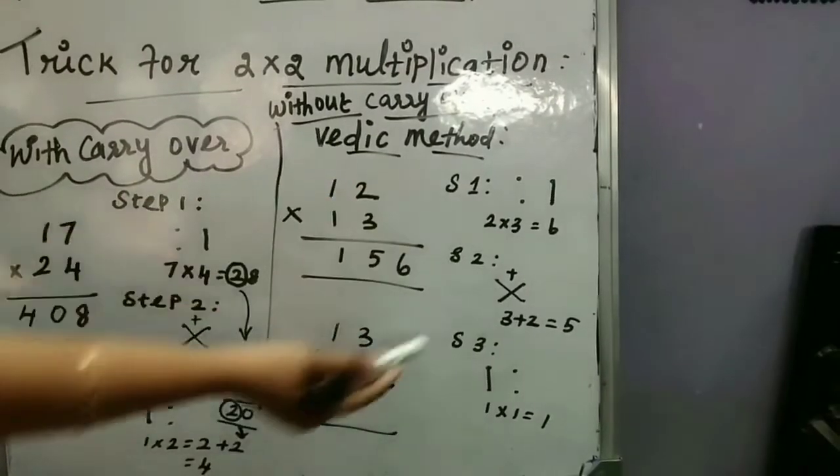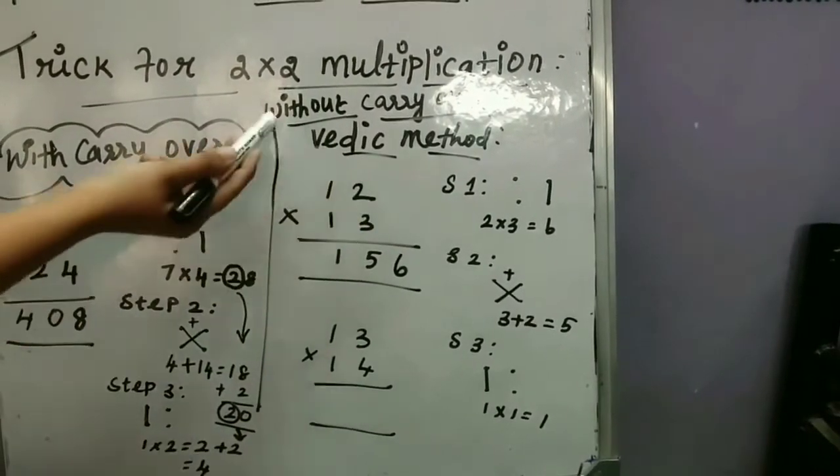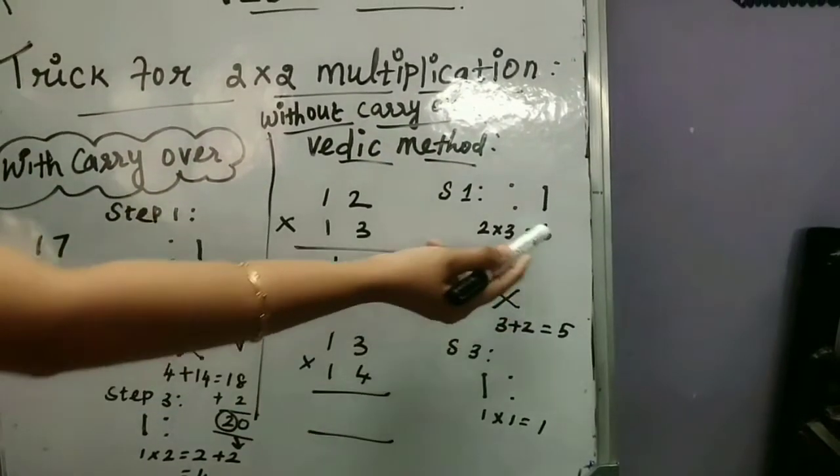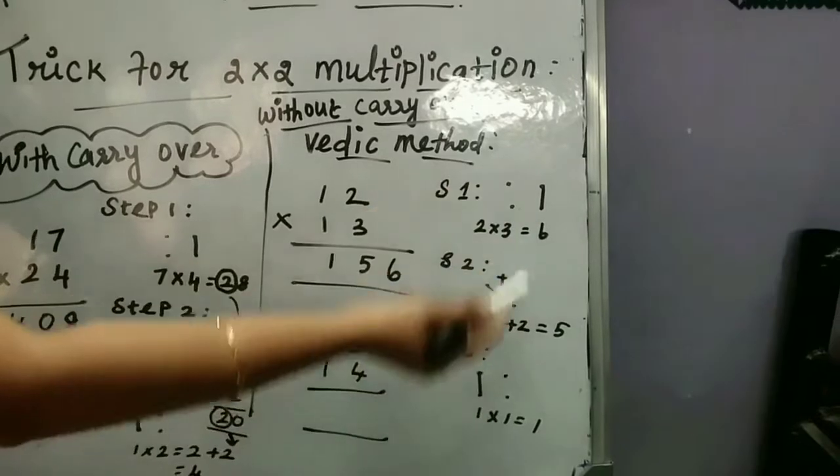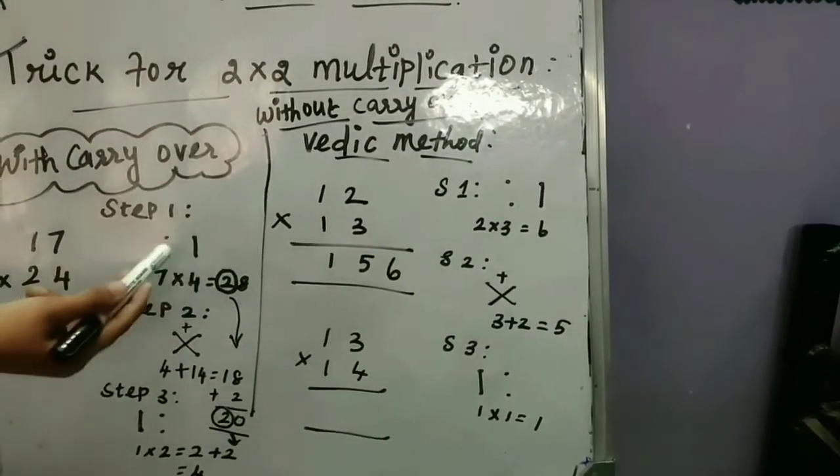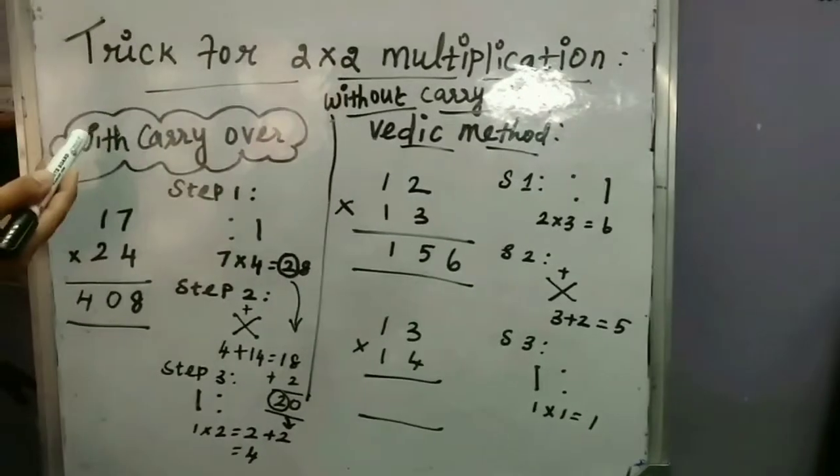This is possible till 99. To any two digits, if we take and multiply, you will get the answer. This method we have done is without carryover. When you do, you didn't get any tens place, you have got only the ones place.